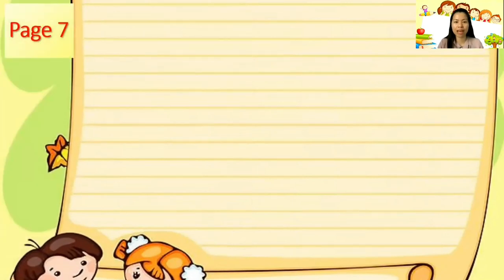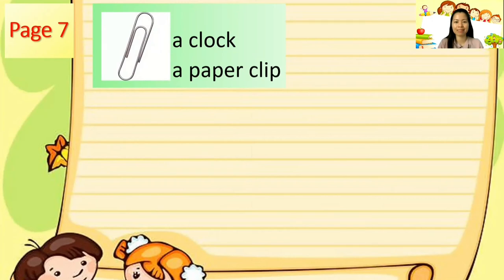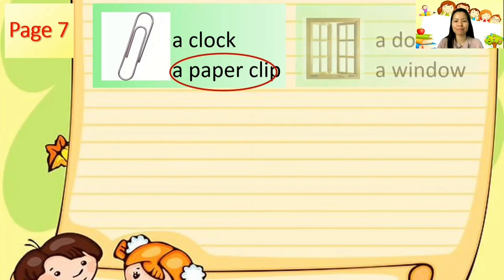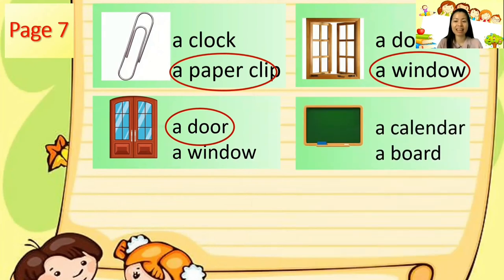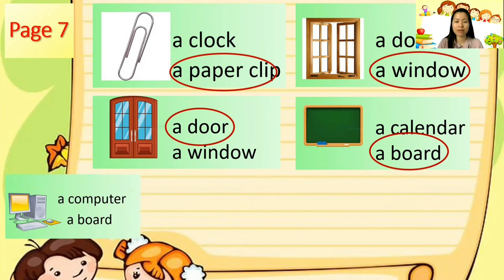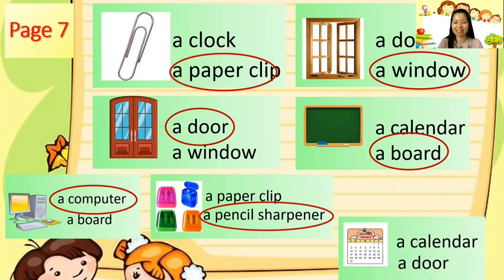Now let's try to see if you can recognize the object and encircle the correct name. Let's start. Is it a clock or a paper clip? Right, it's a paper clip. Correct. Is it a door or a window? It's a window. Is it a door or a window? It is a door. Is it a calendar or a board? Right, it's a board. Is it a computer or a board? It's a computer. Is it a paper clip or a pencil sharpener? Absolutely right, it's a pencil sharpener.